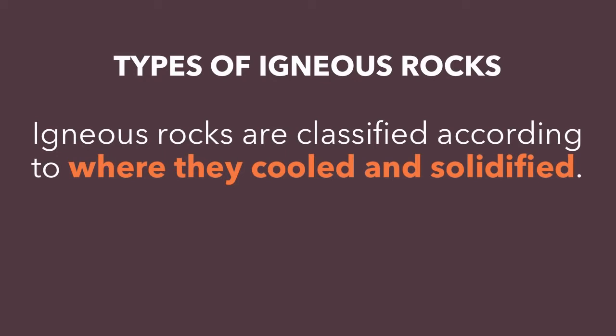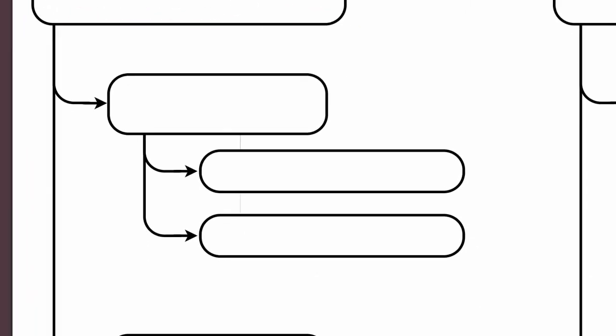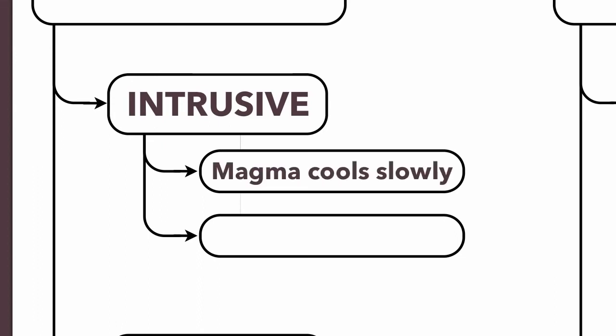That gives us two different types of igneous rocks. Igneous rocks are classified according to where exactly they did their cooling and solidifying. The first type is called an intrusive igneous rock — it formed inside the earth from magma. It's pretty hot inside the earth, so that magma is going to cool very slowly. When it solidifies, it allows minerals to form in crystals, and because it happens so slowly, those crystals are able to grow very large. So intrusive rocks always have very large crystals.